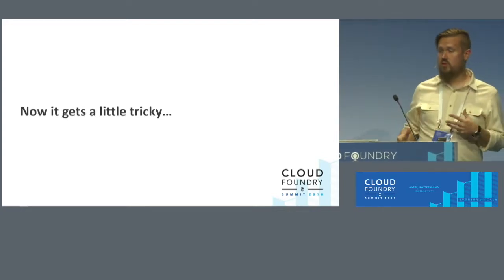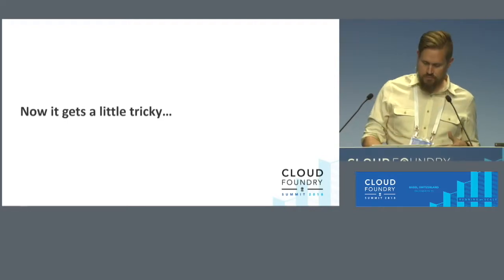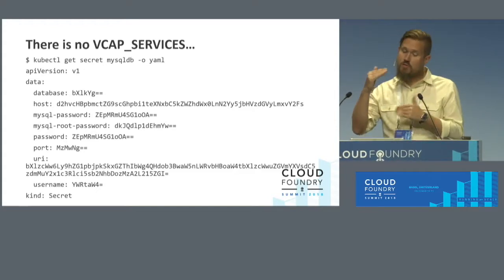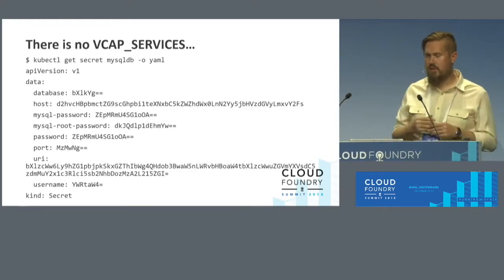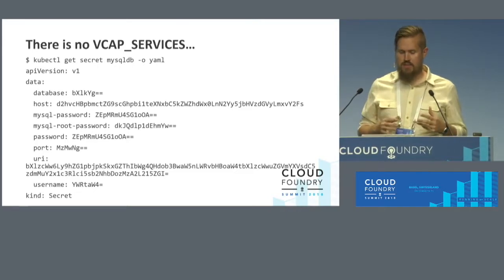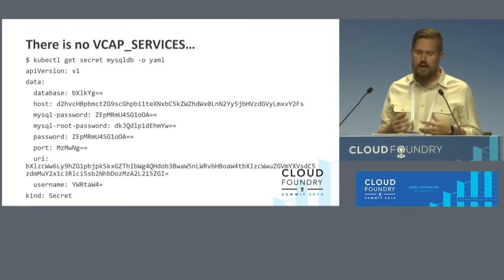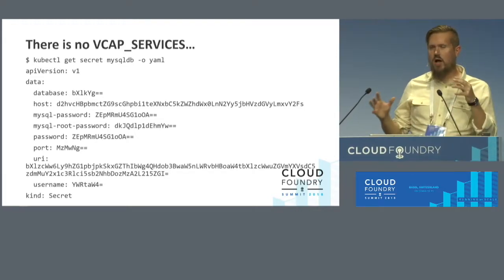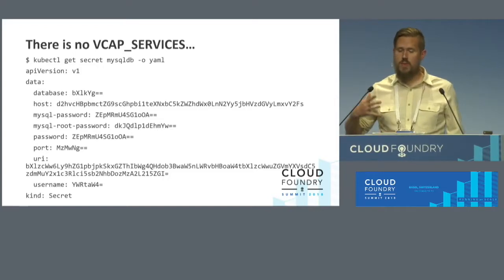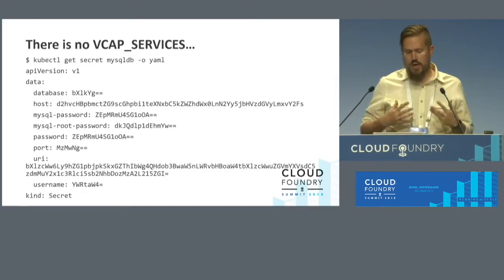Kubernetes has a different way of doing things than Cloud Foundry does, and some of those things bleed through. Binding will create a secret for you, and that secret ends up with whatever fields come back from the binding response from the broker dumped directly into it. There is no VCAP services concept, so you're really responsible for mapping these things directly into your application yourself. Service Catalog does have features that allow you to do transformations — so if you have different services and credentials don't look exactly the same, you can apply transformations to make them look similar.